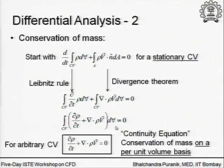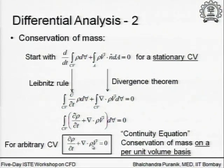This is nothing but conservation of mass on a per unit volume basis. Multiply this by the unit volume and integrate it over the entire control volume and you get exactly what you started with — the basic integral equation for mass conservation. But this is now a differential equation, and this differential equation as the conservation of mass statement — which is called the continuity equation, as many of you would know — has to be satisfied point by point in the fluid domain. The continuity equation is nothing but the conservation of mass statement on a per unit volume basis.